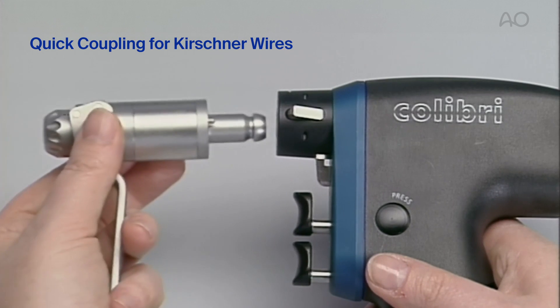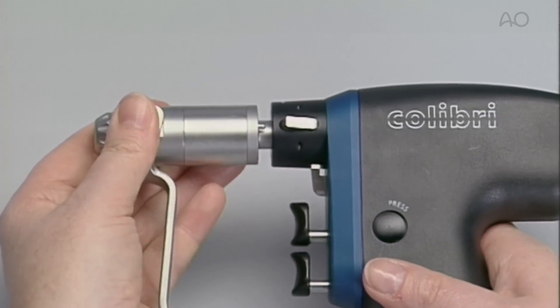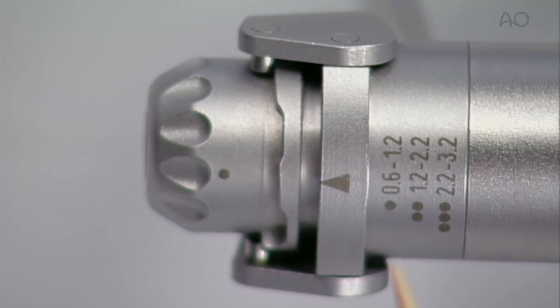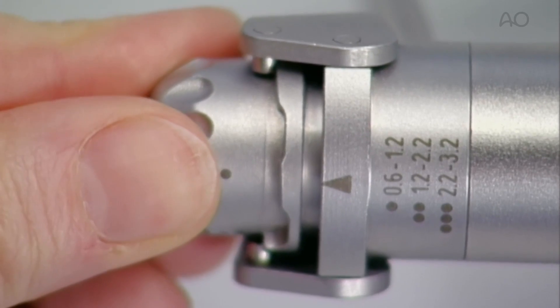The quick coupling for Kirshner wires allows the use of K-wires from 0.6 mm to 3.2 mm. The appropriate range for the diameter of the chosen wire is selected, and the adjustment sleeve is set before inserting the wire.